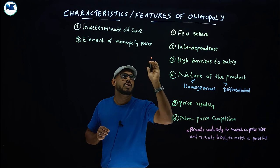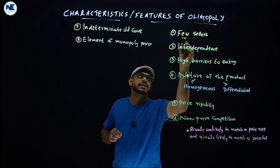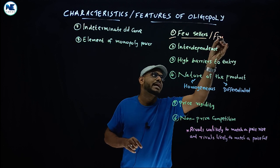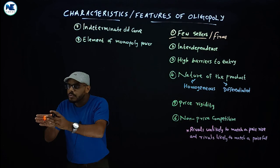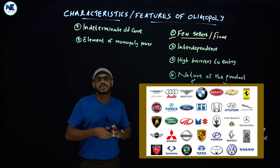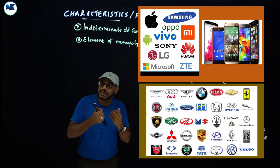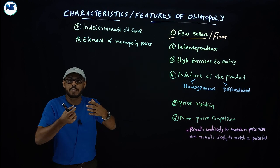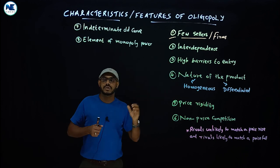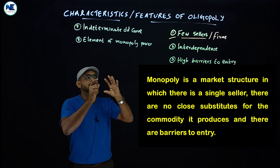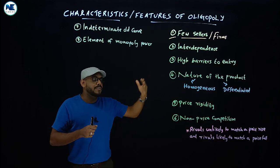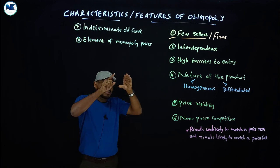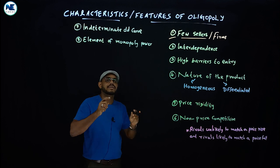The first point is that there are few sellers. Few sellers means there are a few firms in the market. In the automobile industry, cell phone industry, and soft drinks industry — like Pepsi and Coca-Cola — we can see this. Duopoly means there are two firms competing with each other. Unlike monopoly (single seller) or perfect competition (many sellers), the prominent feature of oligopoly is that there exist a few sellers or a few firms.